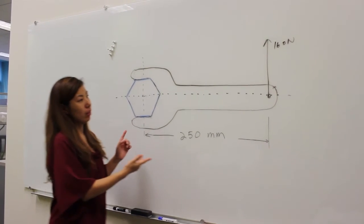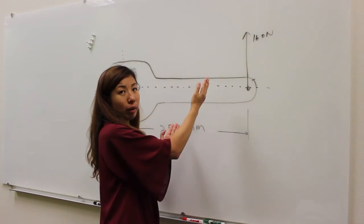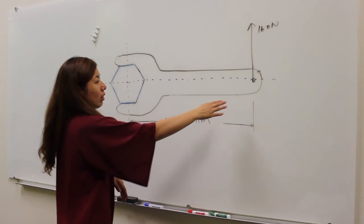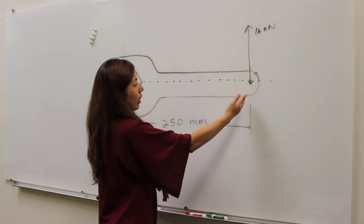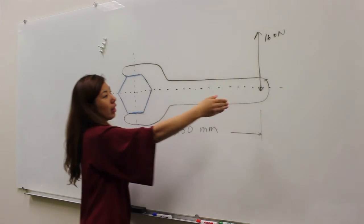Another way to look at this is intuitively thinking about whether the wrench is moving clockwise or counterclockwise. In this case, the wrench is moving counterclockwise, so that's a positive moment.